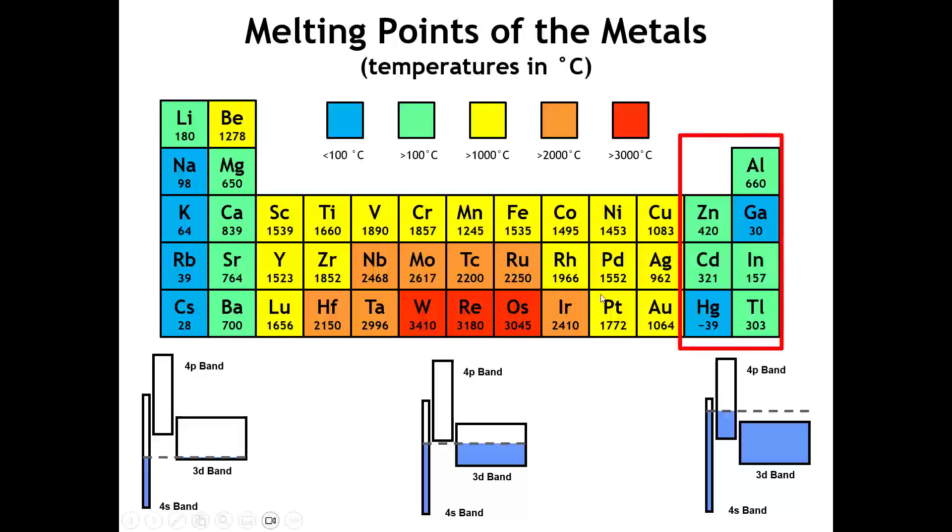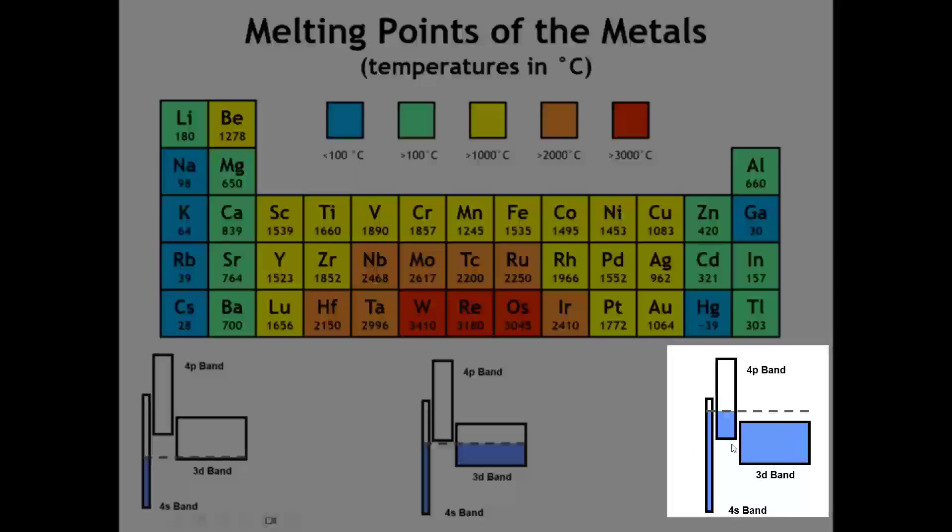As we get to the later transition metals, we see that the melting points start going down again. And by the time we get all the way out of the transition metals, we start to get things like gallium, which melts at 30 degrees C, or mercury, which melts at minus 39 degrees C. That's because we've got this picture down below here where we're filling the D band completely, most of the S band, and a fair bit of the P band. So the only bonding is really coming from the P band there.